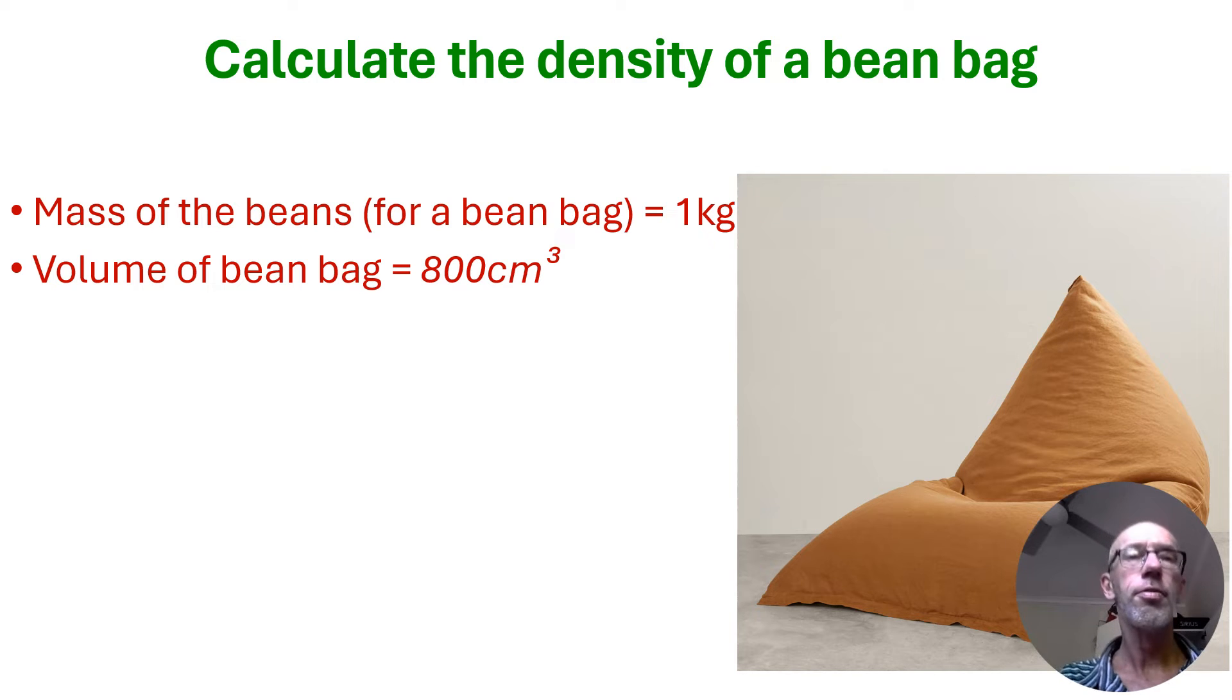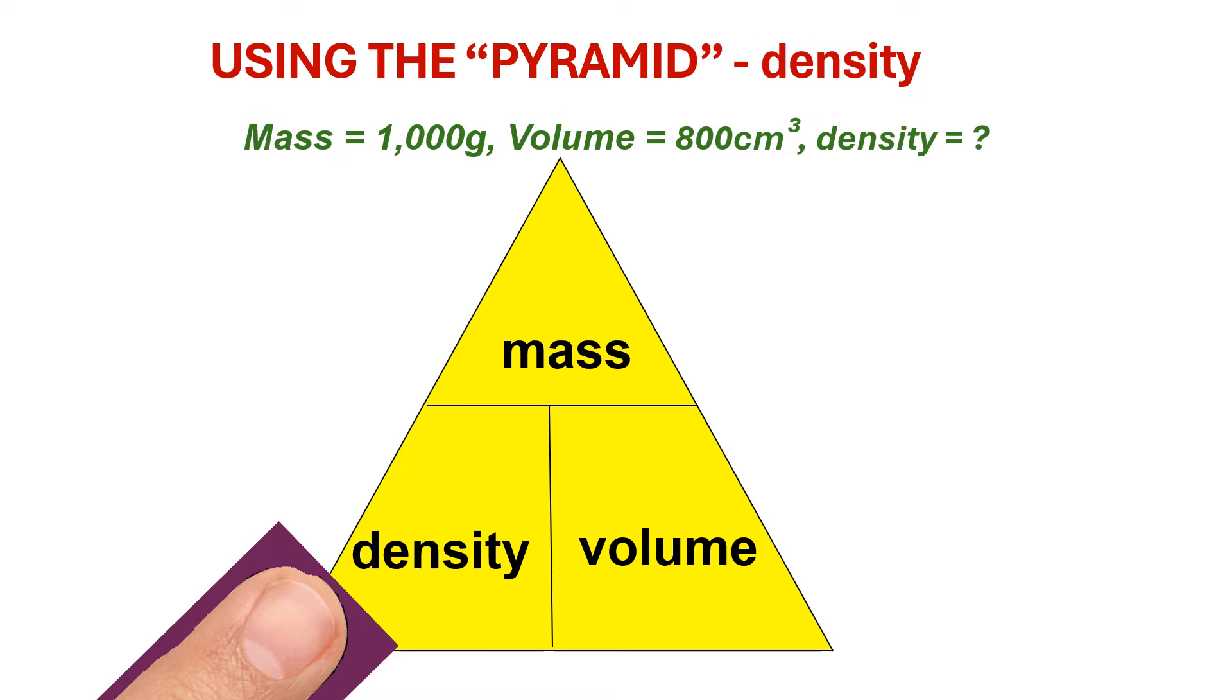So let's go through the first of three variations of the density pyramid with a practical example. So here we've got a kilogram worth of beans. We've got a beanbag with a volume of 800 centimeters cubed. And we want to calculate the density of the beanbag to see if it is appropriate based on the suggested density for beanbags. So now I'm going to show you how to use the density pyramid.